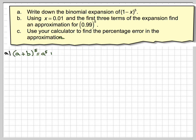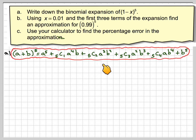So we've got a plus b to the 5 is a to the 5 plus 5c1 a to the 4 b plus 5c2 a cubed b squared plus 5c3 a squared b cubed plus 5c4 a b to the power of 4 plus b to the power of 5.